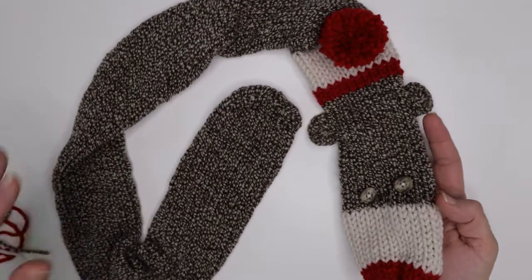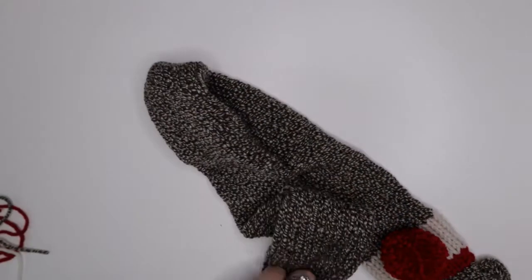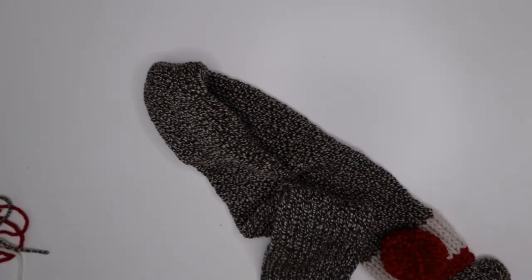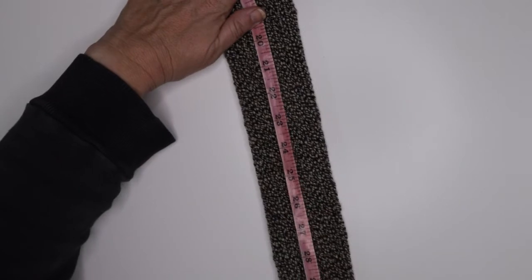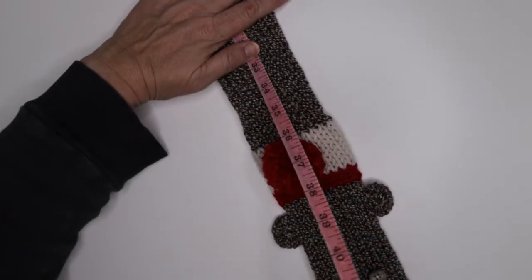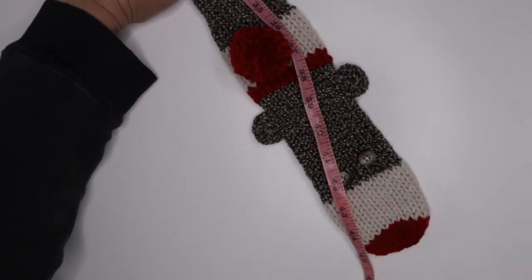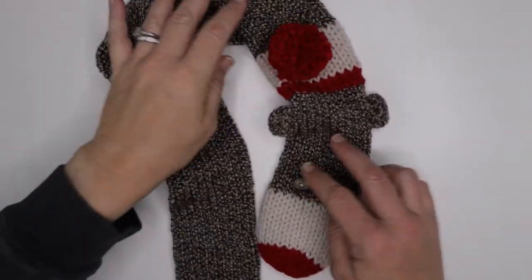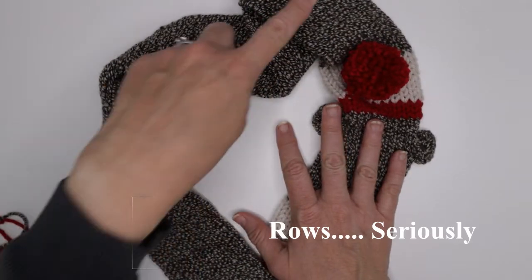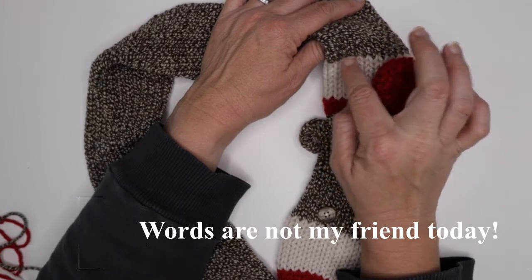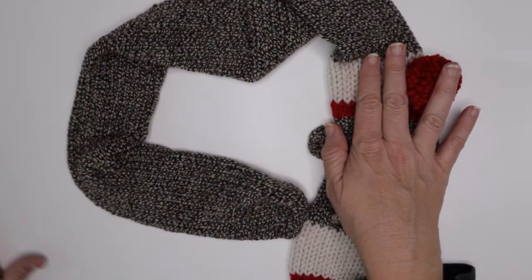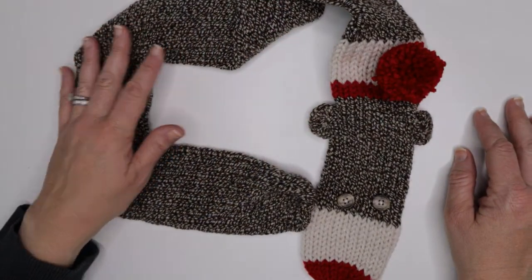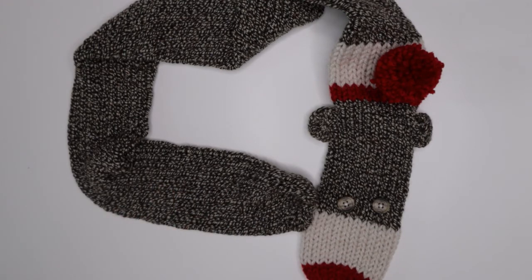That is how you make the sock monkey scarf. I'm going to measure this really quick for you guys just so that you can see if you like this pattern as written. And you can always make it a little bit longer if you need to because I personally would wear this scarf. It's really cute. So this scarf is 45 inches. If you want it a little bit longer or a little bit shorter, just reduce the amount of stitches for the main body of the scarf after you complete the second color B. That's 150 rows, so you would increase or decrease to make it smaller or shorter. I hope you guys enjoyed this tutorial and I look forward to sharing another one with you soon. Have a great day. Bye.